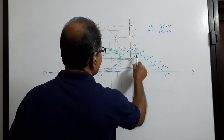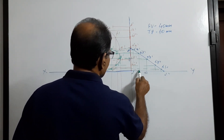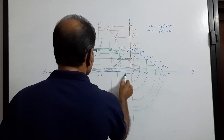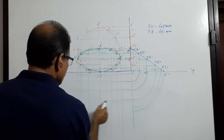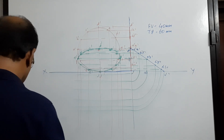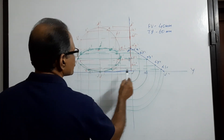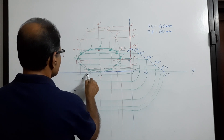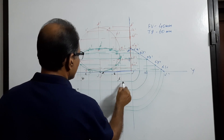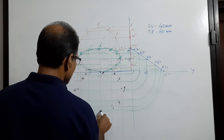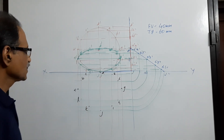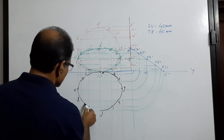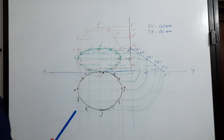Now drop them down, draw arcs, draw horizontal lines, and locate points A, B, C, D, E, F, G, H, I, J, K, L. Connect them and you get an ellipse. The minor axis is 60 mm.